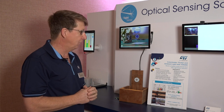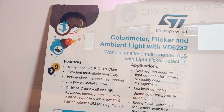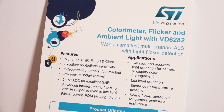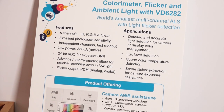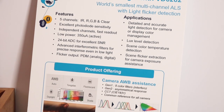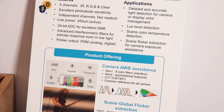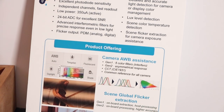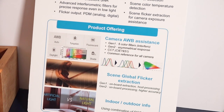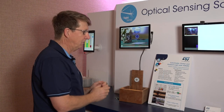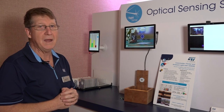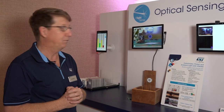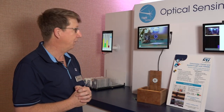Another trick this device can do is register flicker. The flicker occurs when the LED ambient light plays with the rolling shutter camera of a cell phone. But if you know how fast the LEDs are flickering, the camera can adjust, and this device will do that perfectly. It sits right next to the camera in a cell phone and it's pretty handy for a lot of things.